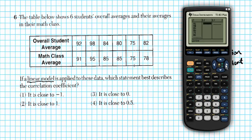Our second list is going to be the math class average. So let's enter the data. 91 enter, 95 enter, 85 enter. We have another 85, 75, and lastly 78. So let's first check. 91, 95, 85, 85, 75, 78, perfect.